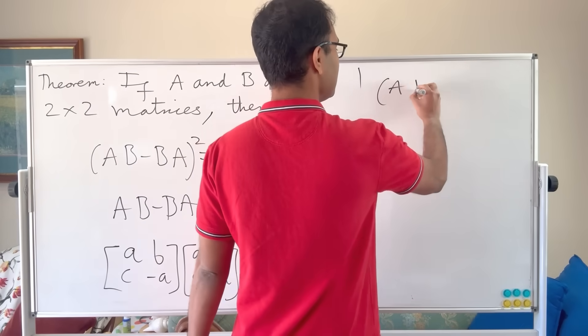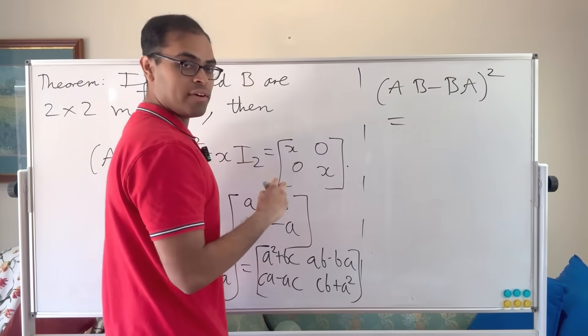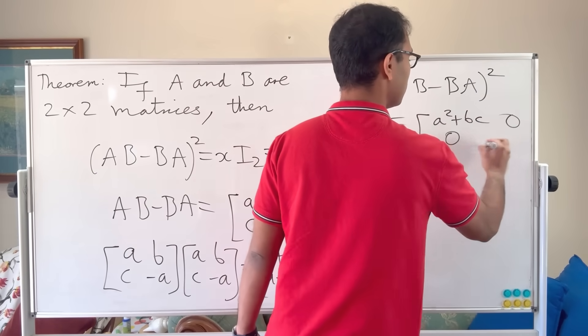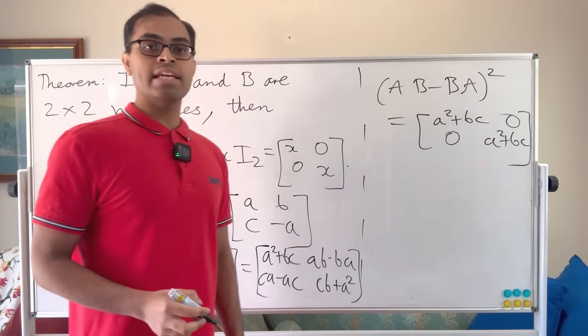So therefore, AB minus BA squared is just going to equal to the following: it's going to equal to a squared plus bc, 0, 0, a squared plus bc. Hence, it is a scalar multiple of the identity matrix.